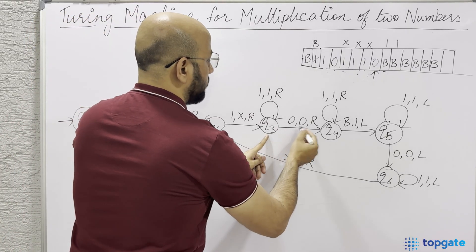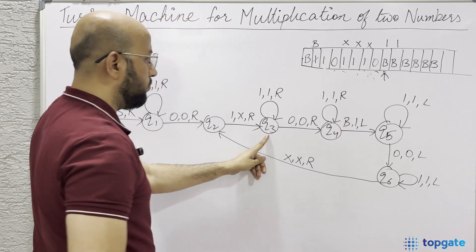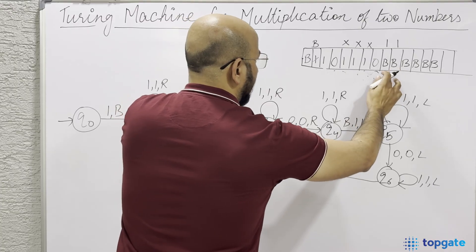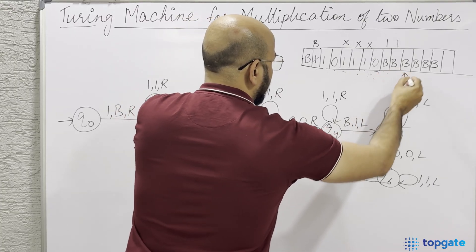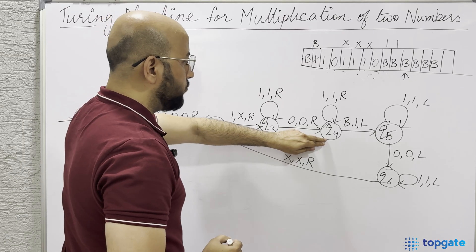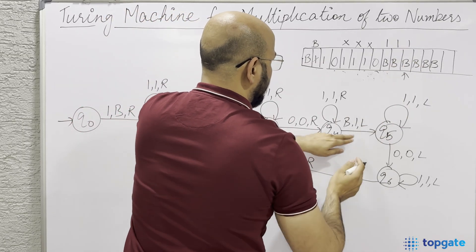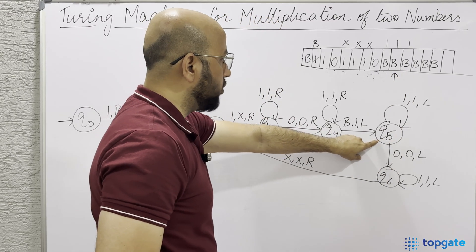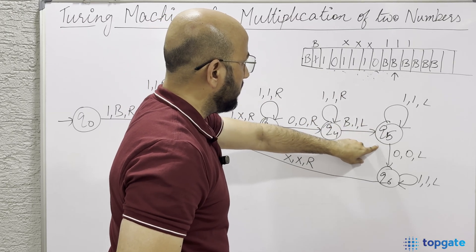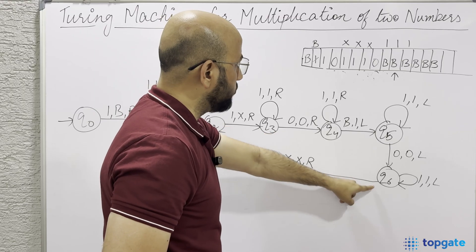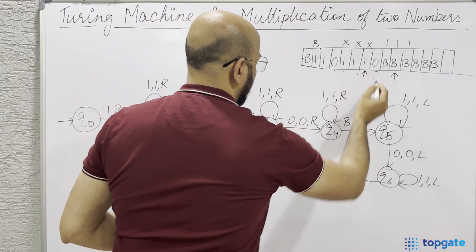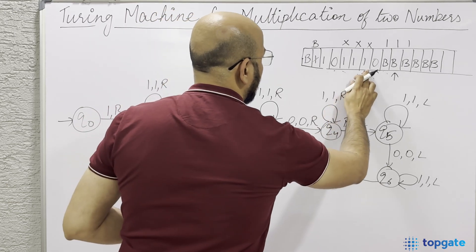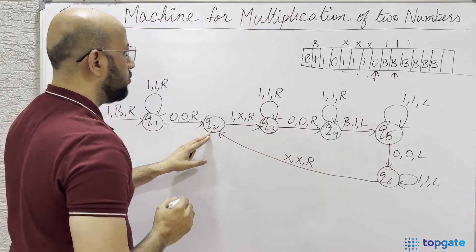At Q2, 1XR: this 1 is changed to X, the pointer moves to the 0, reaching Q3. At Q3, the 0 is skipped, reaching Q4 with the pointer on the existing output ones. At Q4, all 1s are skipped until the blank, which is changed to 1, going left to Q5. At Q5, 1s are skipped, then the 0 is skipped, reaching Q6. All 1s are skipped until the pointer points to the X, then XXR takes it right to Q2.